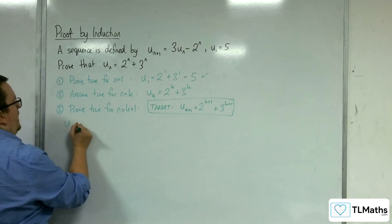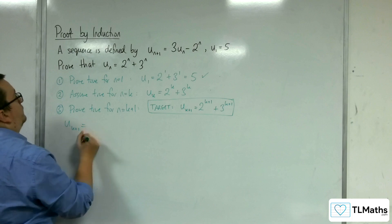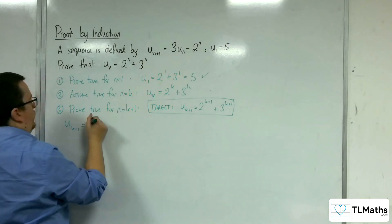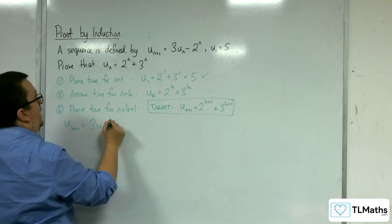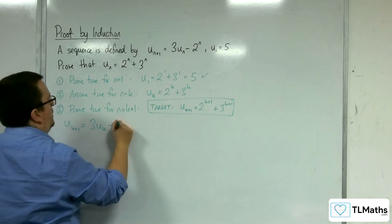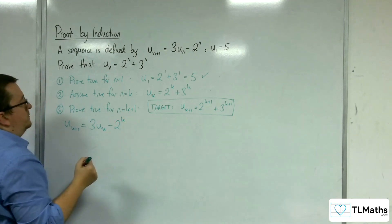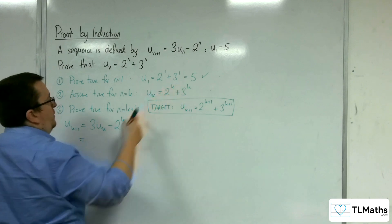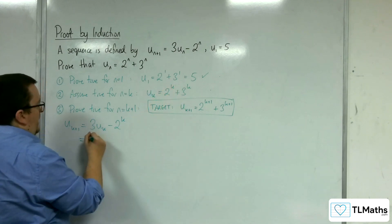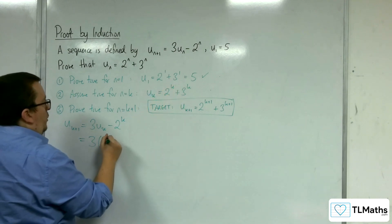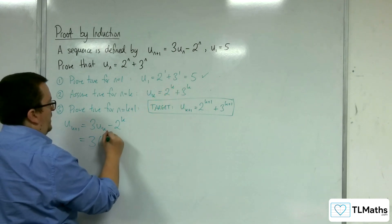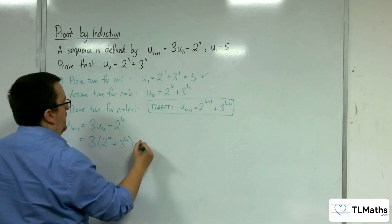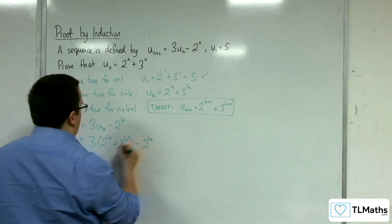So u_{k+1}, substituting n for k, we get 3 lots of u_k take away 2^k. The u_k, remember, is 2^k + 3^k. So we have 3 lots of (2^k + 3^k) take away 2^k.